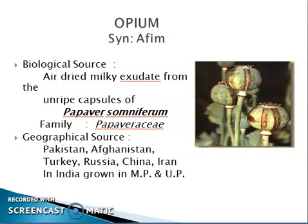The next drug is opium, synonym opium poppy. Biological source: air-dried milky exudate from the unripe capsules of Papaver somniferum, family Papaveraceae. Geographical source includes Pakistan, Afghanistan, Turkey, Russia, China, and Iran. In India, it is grown in Madhya Pradesh and Uttar Pradesh.